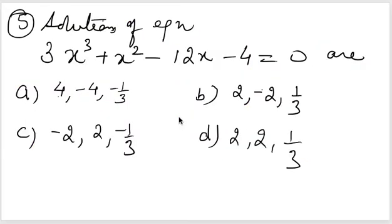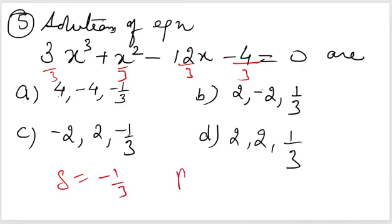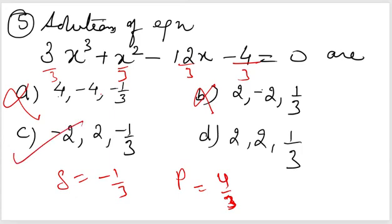Fifth example: the leading coefficient is not one — it is 3. So first divide the entire equation by 3 to make the leading coefficient one. Now apply the relations: the sum of roots = opposite sign of the x² coefficient = minus 1 by 3, and the product of roots = opposite sign of the constant = 4 by 3. Checking options: one option gives sum minus 1/3 but product 16/3 — not correct. The option giving sum minus 1/3 and product 4/3 is correct — that is option C.